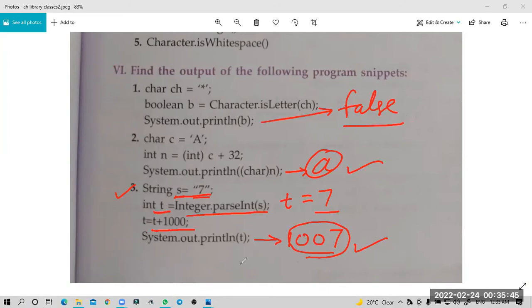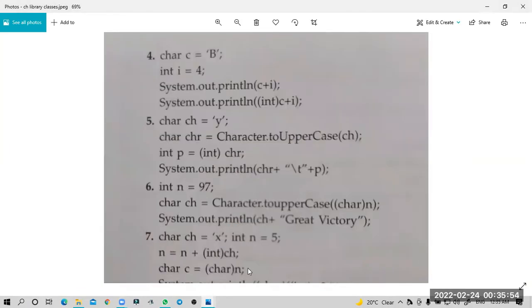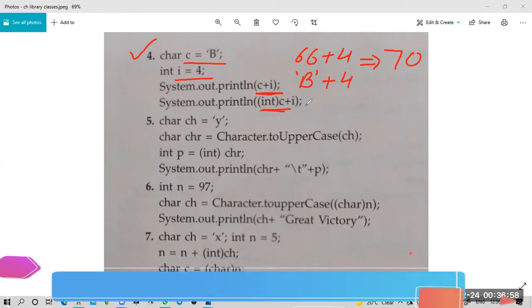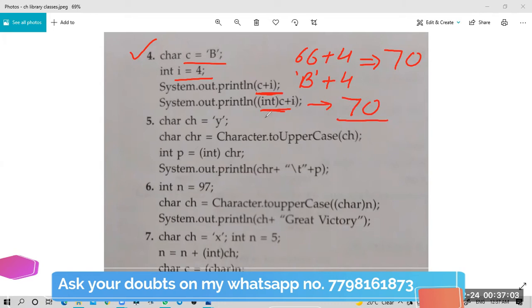Question four: c equals 'B', i equals 4, c plus i. I is 4 and c is B. We can't add B directly, so what's the ASCII code of B? It is 66. 66 plus 4 equals 70, so the answer is 70. Both conversions give the same answer: 70.